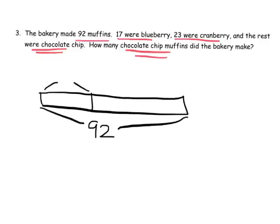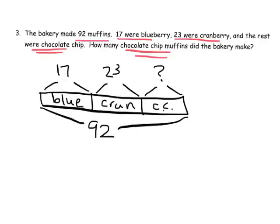And we know that 17 were blueberry. So, I'm just going to write blue. We know that 23 were cranberry. So, I'm going to put cran and then the rest were chocolate chip. So, I'm going to put my question mark and a cc for chocolate chip. And so, it's the exact same strategy. We can either add 17 and 23 and then subtract from 92. Or, we could start with 92 and subtract out 17 and then subtract out 23.